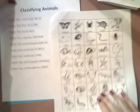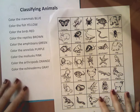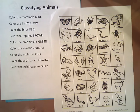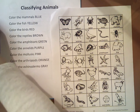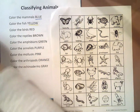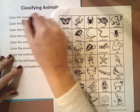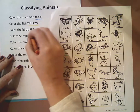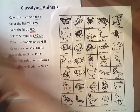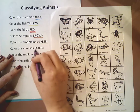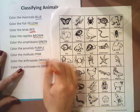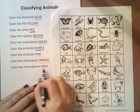The next two pages behind the learning goal include a classifying animals page and then a page with all these different animals on it. You are going to color code the animals on this page. Color the mammals blue, color the fish yellow, color the birds red, color the reptiles brown, color the amphibians green, color the annelids purple, color the mollusks pink, color the arthropods orange, and color the echinoderms gray — I don't have gray, so I'm just going to do a light black.